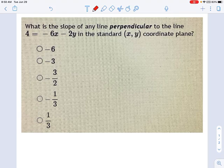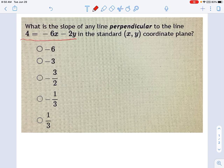What is the slope of any line perpendicular to the line 4 equals negative 6x minus 2y? That's what we're asked here.